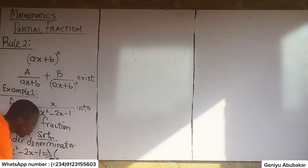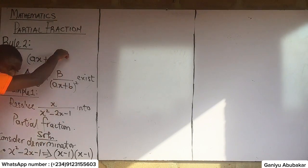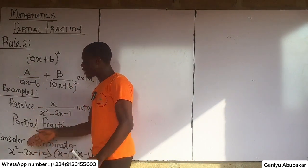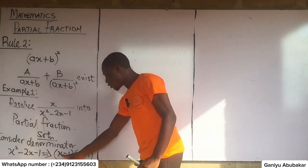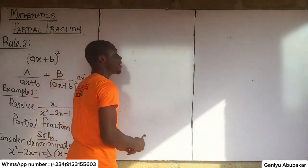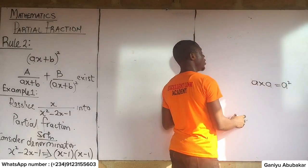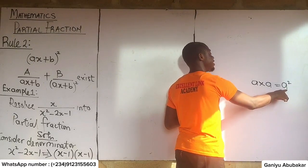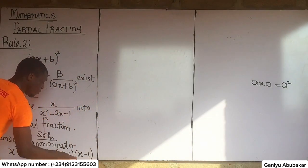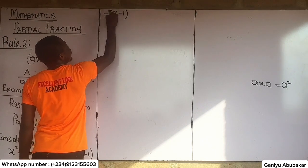Applying the quadratic formula or factorization method, you get two roots: (x − 1) and (x − 1). Observe that in mathematics, a multiplied by a gives a squared; similarly, (x − 1)(x − 1) gives (x − 1) squared. So this denominator yields a repeated factor.